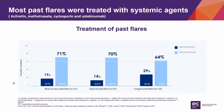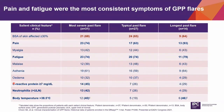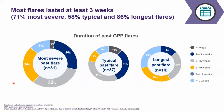Most past flares were treated with systemic agents. Most patients had flares that affected at least 30% of their body surface area — about 60% of them. Pain and fatigue were the most consistent symptoms of GPP flares. Body temperature above 38.5 degrees Celsius was mainly a feature of the most severe and longest past flares. Raised CRP and neutrophilia were mainly features of the most severe flare. Most flares lasted at least three weeks — 71% of most severe flares, 58% of typical, and 86% of longest flares lasted at least three weeks.